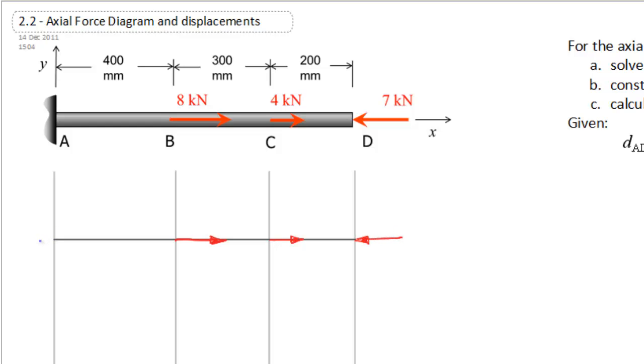And quickly change colors, and I'm going to put my reaction on the other one. So my reaction, I'm going to draw it in going to the left, just because I think that that's probably the direction that it's going to go. So I'll label these up. So we have reaction at A in the x direction, and these were eight kilonewtons, four kilonewtons, and seven kilonewtons.